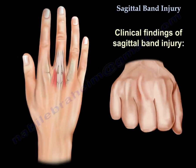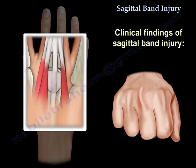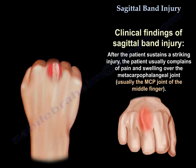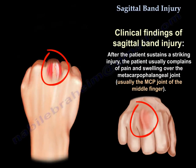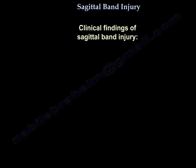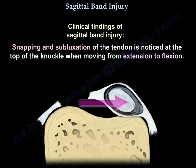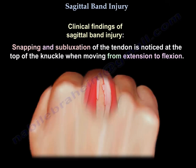Clinical findings of sagittal band injury. After the patient sustains a striking injury, the patient usually complains of pain and swelling over the metacarpophalangeal joint, usually the MCP joint of the middle finger. Snapping and subluxation of the tendon is noticed at the top of the knuckle when moving from extension to flexion.